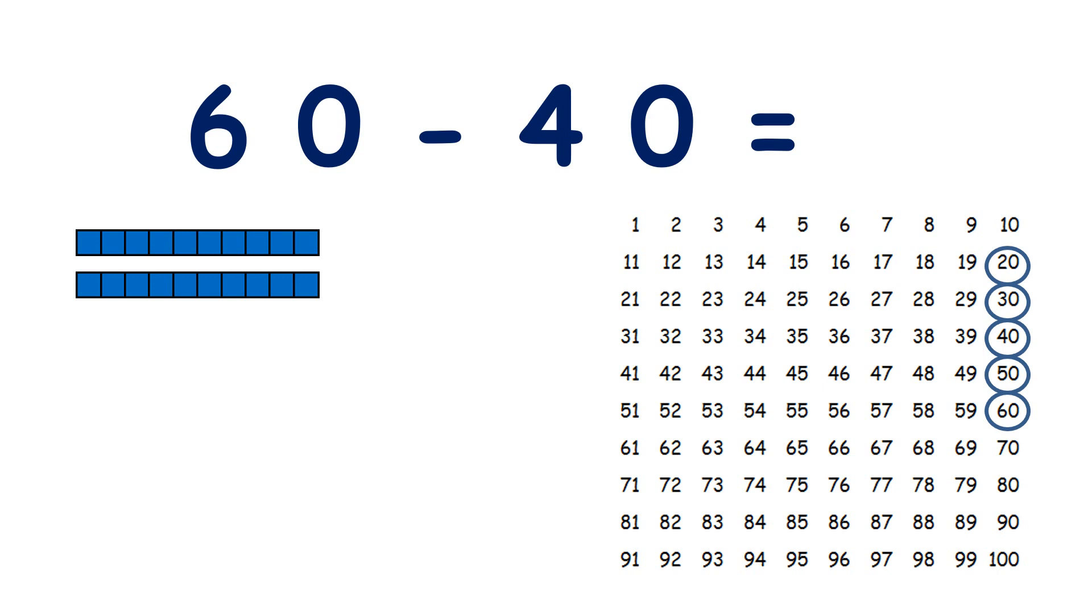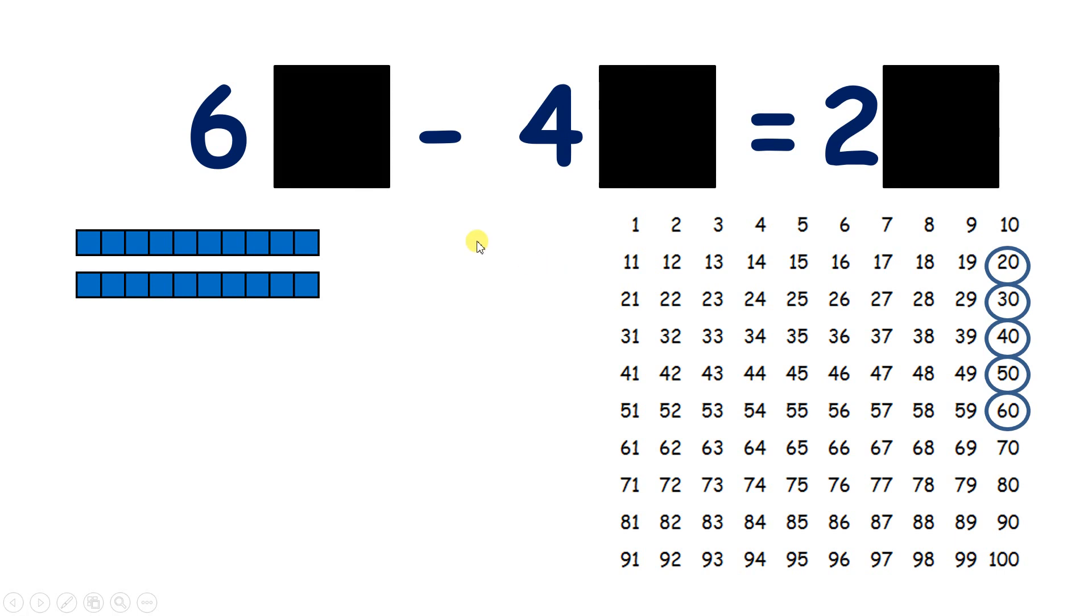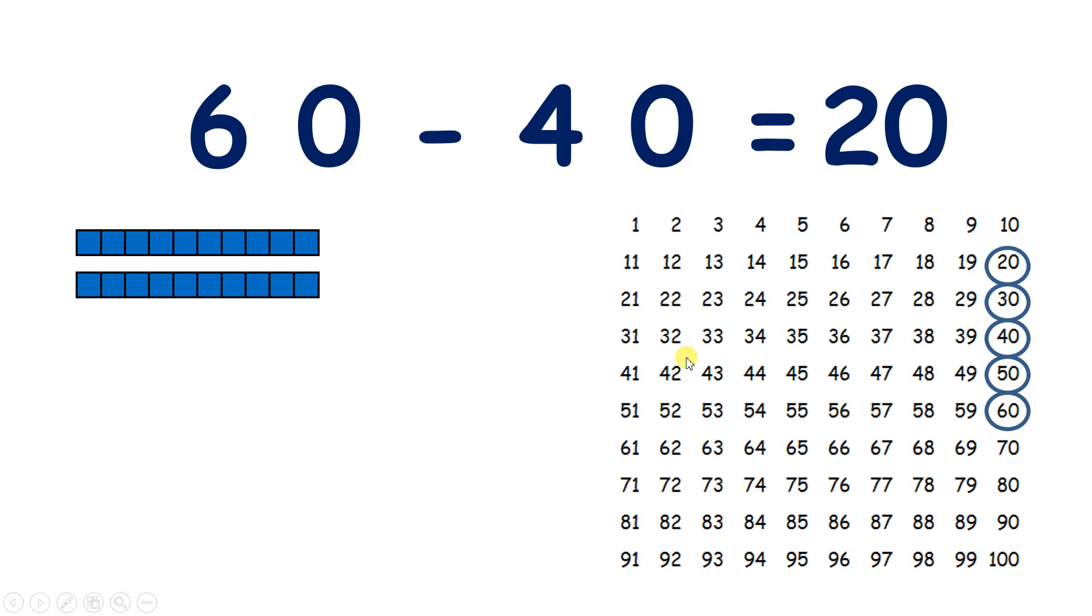So 60 subtract 40 is 20. And if we know that 6 minus 4 is 2, we don't really have to use a 100 square, because we know that 60 minus 40 is 6 tens minus 4 tens, and that leaves us with 2 tens, or 20.